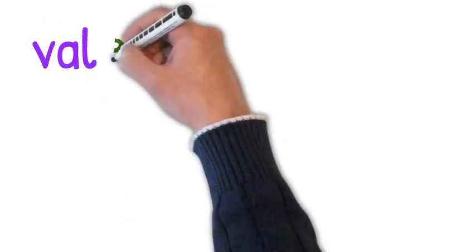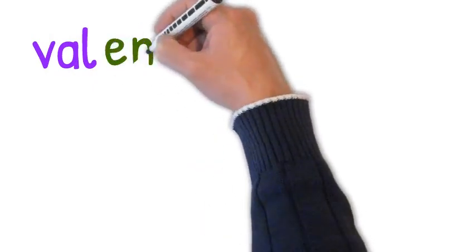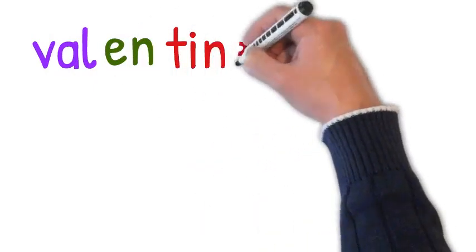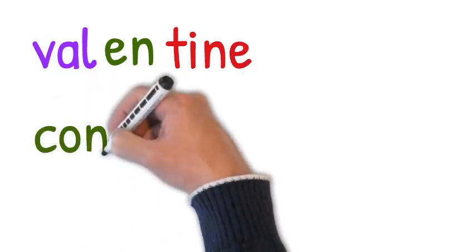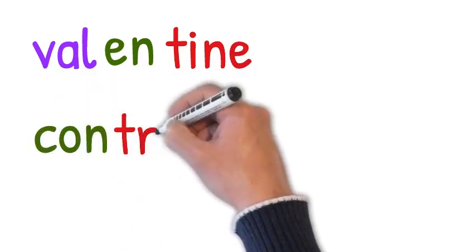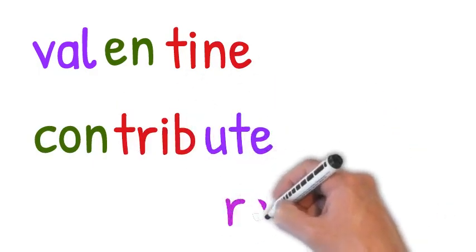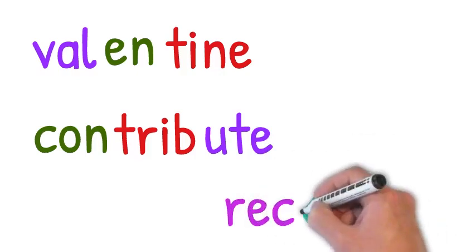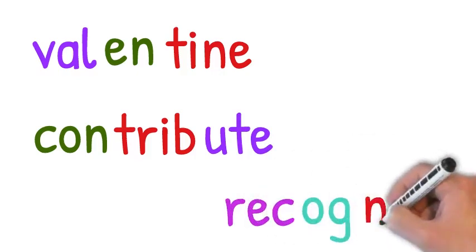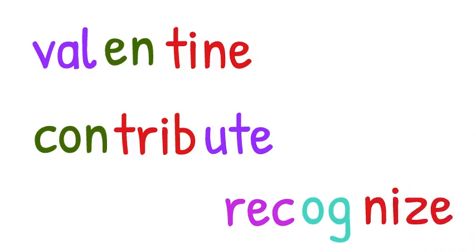Now let's try to read some three-syllable words with the silent E being one of the syllables. Look at the first one. We have a closed syllable, val. Then we have another closed syllable, en. Then we have the last syllable being a silent E syllable, tine. Valentine.